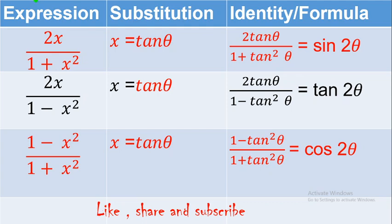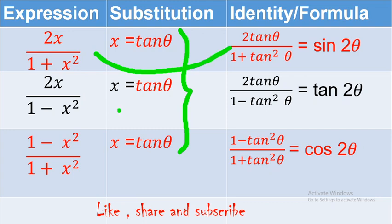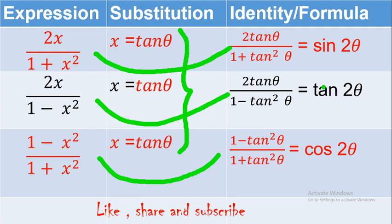The next one involves double angle formulas. For all three — sin 2θ, tan 2θ, and cos 2θ — the substitution is the same: x = tanθ. The trick is: remember the formula, the identity. Just compare the expression with the formula and you will easily find what the substitution is and what the answer will be.